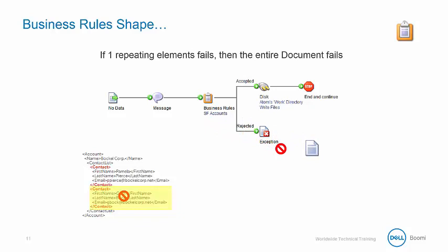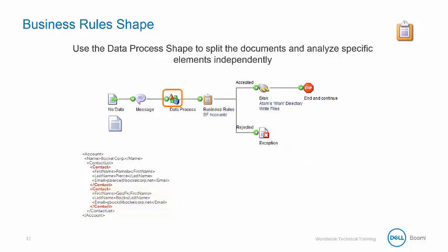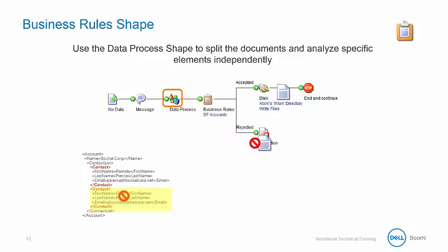To handle this better, we use the data process shape to split the documents and then analyze specific elements independently. Let's assume we split the documents using contact as the split element. We now have two documents, each containing separate contact details. If one of the contact elements fails the business rule, then only the document representing that particular contact will be rejected and the other document will be accepted.